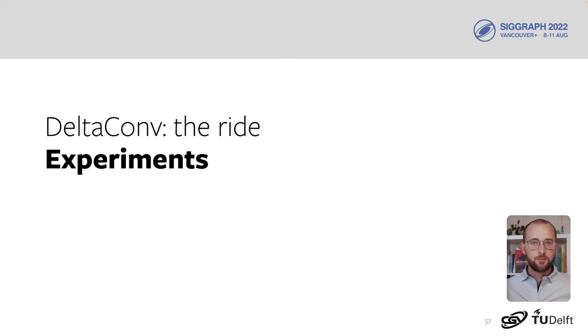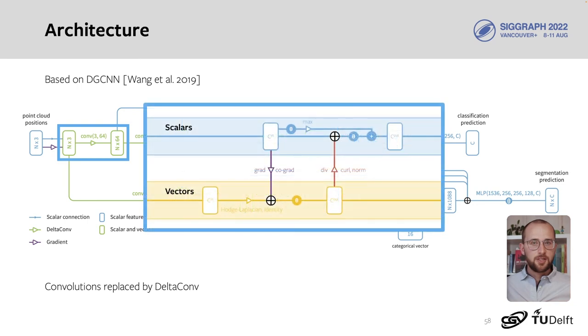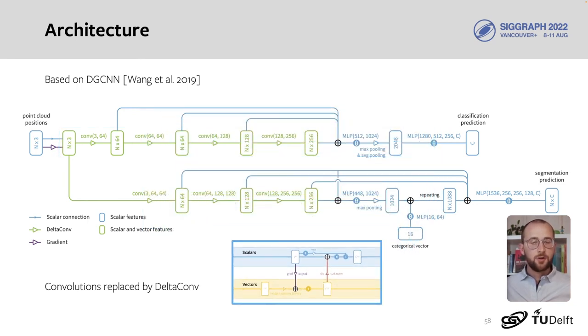Let's take DeltaConv for a spin. We start with the architecture proposed in DGCNN, the network around EdgeConv. Each convolution is replaced with the operations in DeltaConv. The result is a very simple architecture with three to four convolution layers in a single scale.